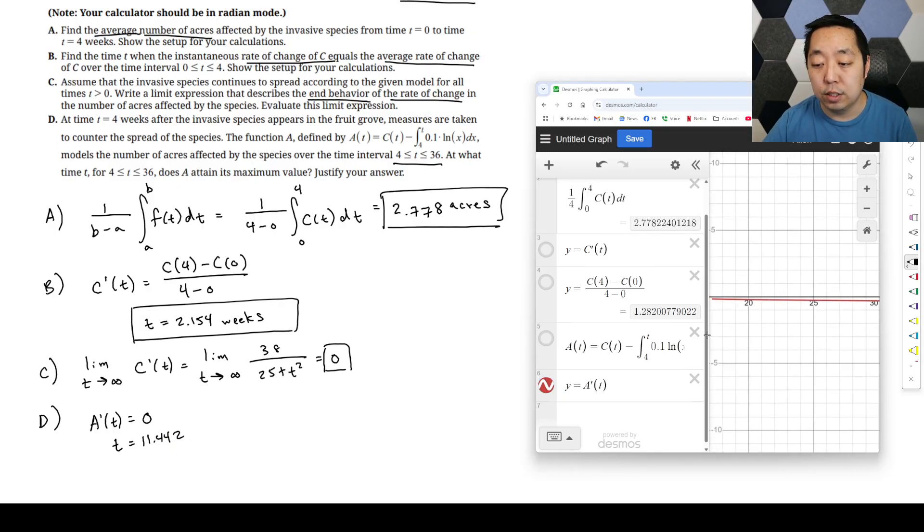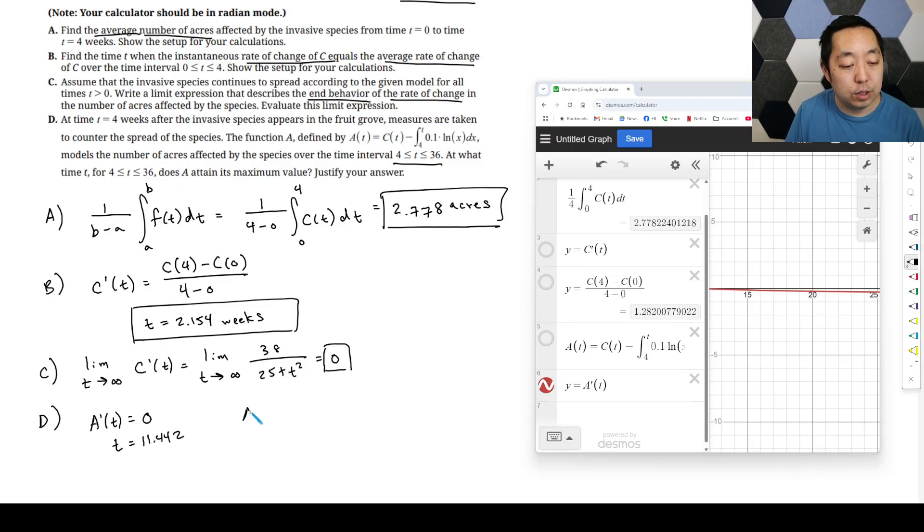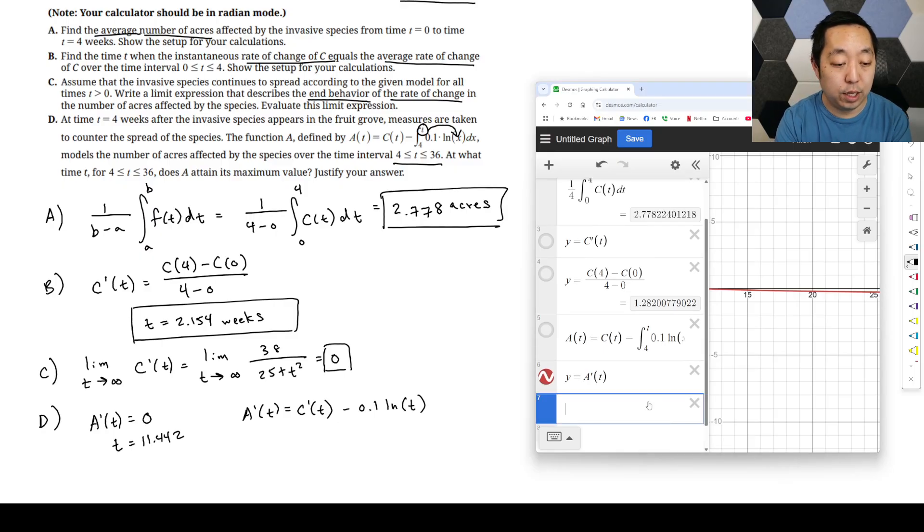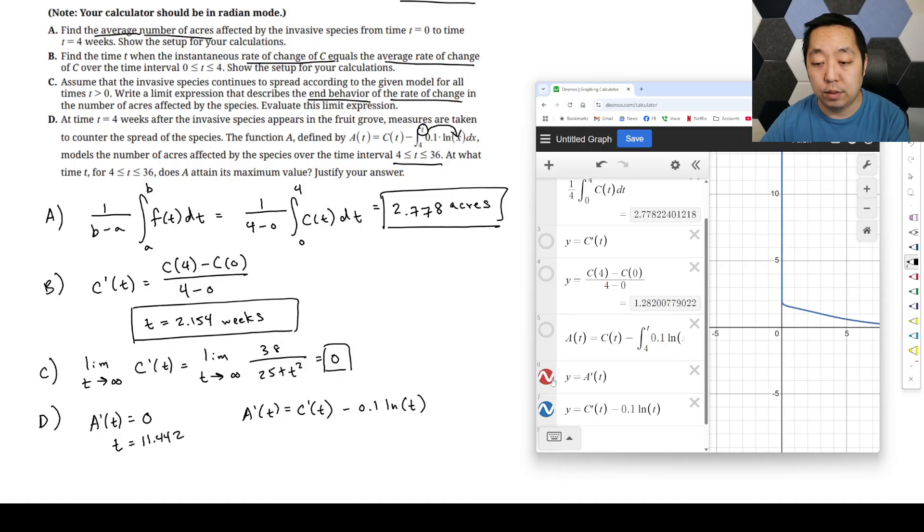If you did the derivative by hand, you could also say A prime of T is equal to C prime of T, and they may have a point to show that, so I would recommend you do this. What do you do when you take the derivative and the parameters in the expression? That's the second part of our fundamental theorem of calculus. You're just going to plug in ln of T like this. So you can also plot that just to confirm it's the same thing. So if I do Y equals C prime of T minus 0.1 ln of T, you'll see you get the same thing because they're just sitting on top of each other. So I did that correctly.